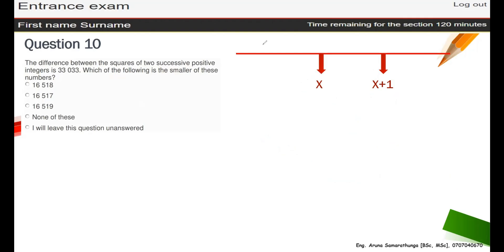Then we're going to take this. What is the question said? The difference between squares. Squares means this, of two successive positive integers. Difference between means minus. So the difference between this one is equal to 33033. Now we are going to solve this equation here.